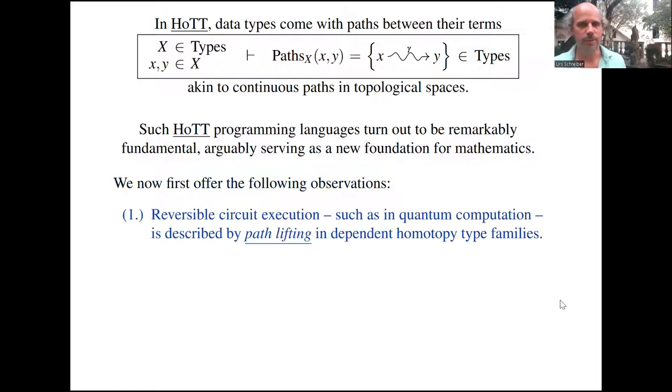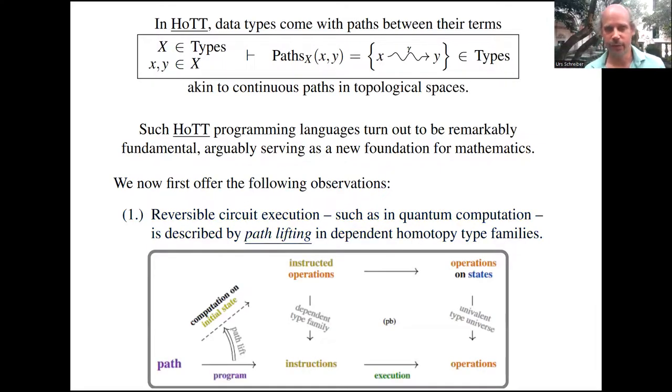We make three observations. First, it's kind of obvious once you've wrapped your mind around what's going on. We observe that reversible circuit execution, such as in quantum computation, is described exactly by this path lifting operation in dependent homotopy type families. That's the natural reflection, as shown in this cartoon. You think of your base type, the path in your base type, as being the names of gates, the instructions, and the lift of a path is the execution of these instructions.